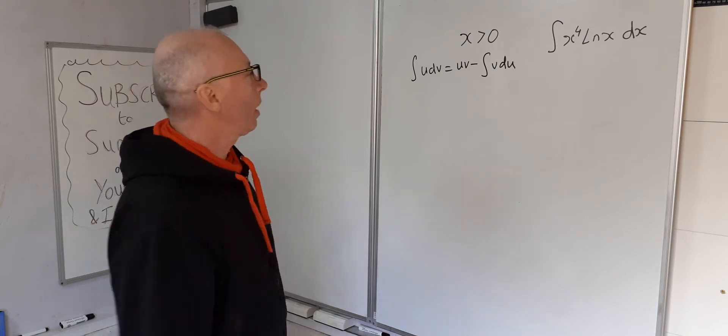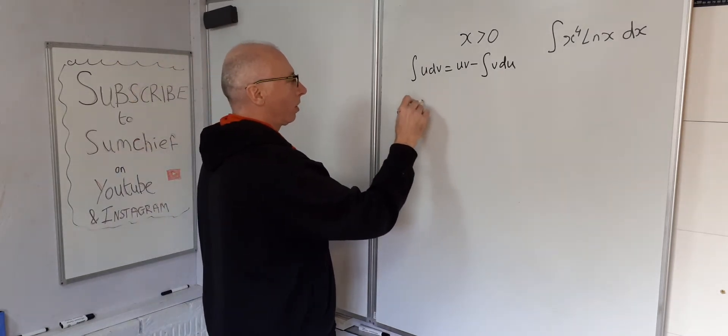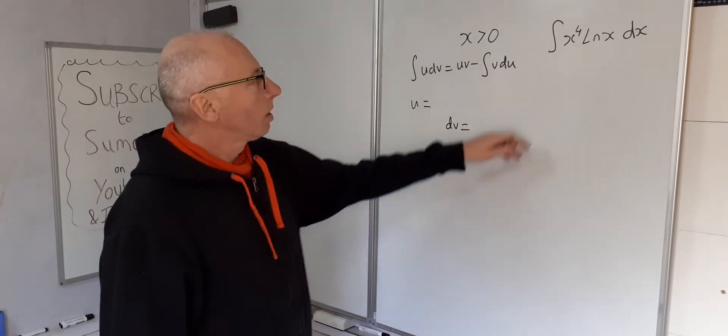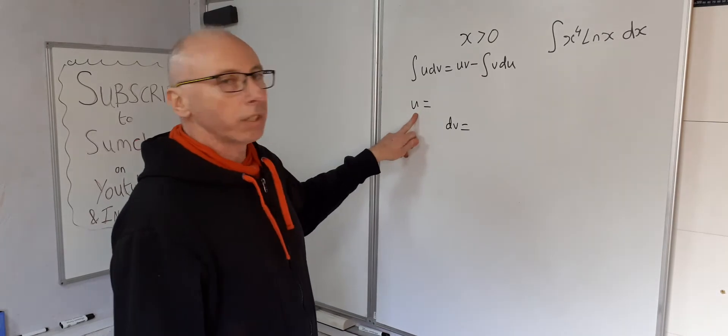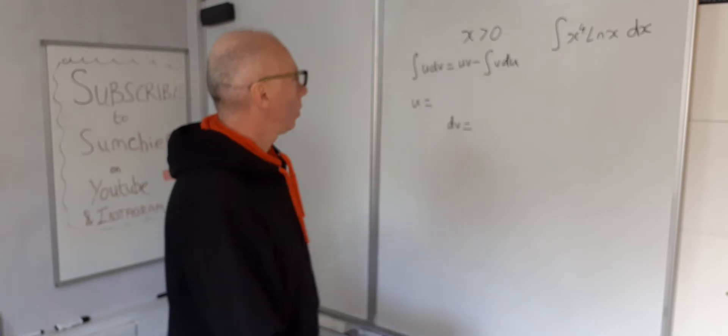So we need to assign our variables now, our u and our dv. So that's our question. So u equals, dv equals. So as we're going to have to differentiate this to get to the du, we're better off choosing natural log of x for du.